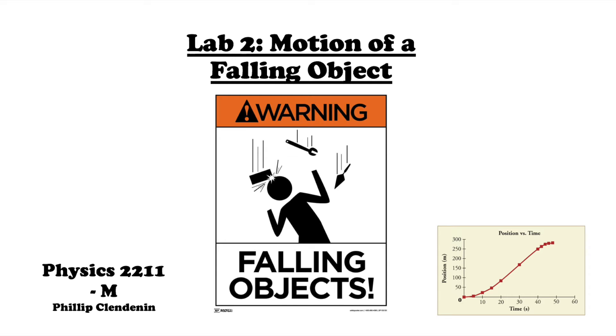Hi, my name is Philip Clendenin and this is lab 2 focusing on the motion of a falling object taking place at Georgia Tech in Physics 2211, Section M.